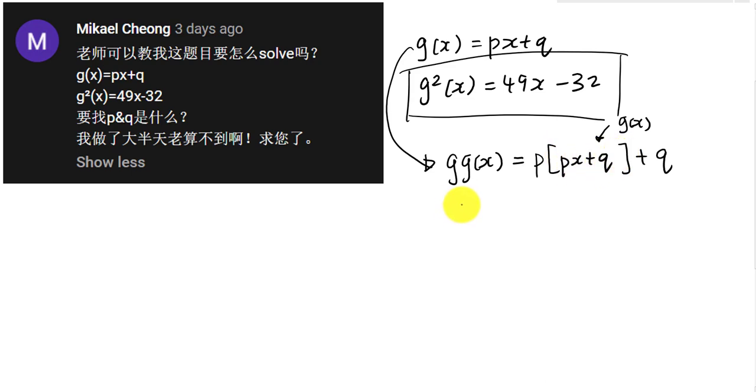So what is my g(x) again? My g(x) will be px plus q, so this is what happens for my g²(x). Basically, I will get p²x plus pq plus q. This is plus pq plus q.